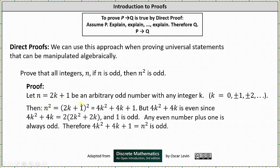Then n² is equal to the square of the quantity (2k + 1). If we multiply this out, this is equal to 4k² + 4k + 1. But 4k² + 4k is even, since 4k² + 4k = 2(2k² + 2k), and 1 is odd.